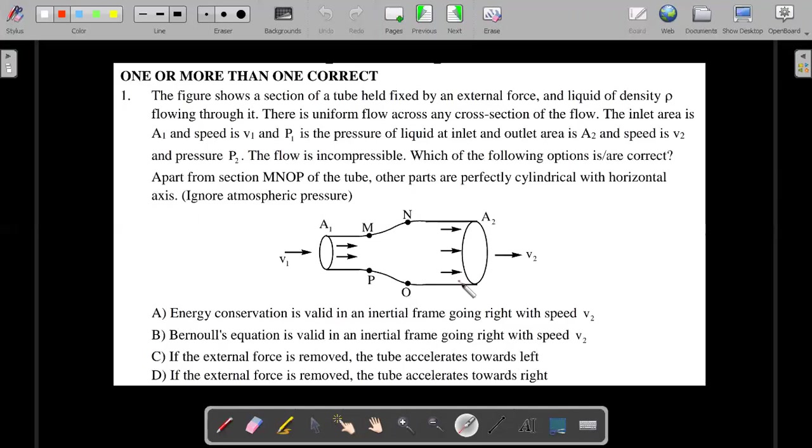The options are: energy conservation is valid in an inertial frame going towards right with speed v2, Bernoulli's equation is valid in an inertial frame going right with velocity v2, if external force is removed the tube accelerates towards left, or if the external force is removed the tube accelerates towards right. You want to have a try, pause it and then move forward.